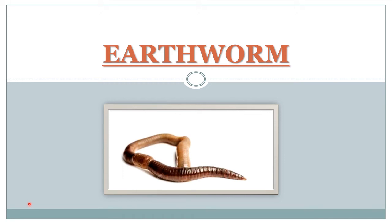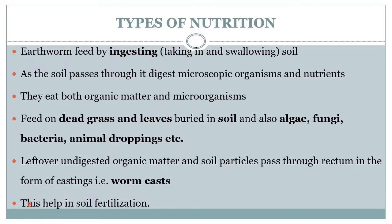Hello everyone. Today we will see the type of nutrition in earthworms. Earthworms are detritivores, which means they feed on dead organic material like soil, dead grass, leaves, algae, fungi, bacteria, animal droppings, etc. They ingest the food, digest it, and the undigested material is thrown out in the form of circular pellets. Those pellets are rich in nitrogen, and that's why farmers use them as organic fertilizer.